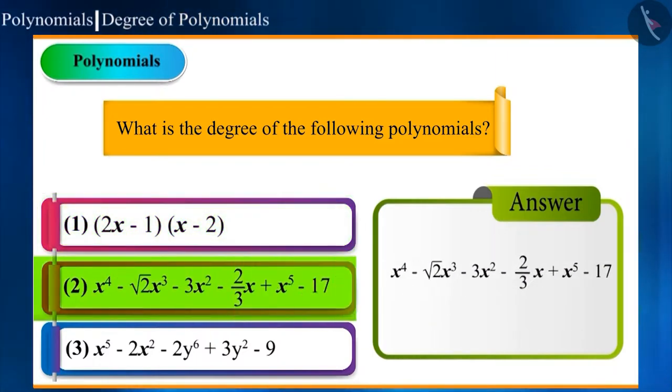Let us see the second option. The power of variable of the first term is 4, but it is not the highest. Fifth term of this polynomial is x⁵, where the power of x is 5. Hence, this is a polynomial with the degree 5. It would be better to write such polynomials in the descending order of their powers.